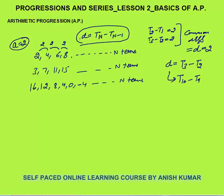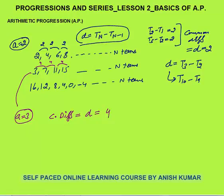The second progression is also an arithmetic progression. Here the first term A is 3. What is the common difference D? You can see that 7 minus 3 is 4, so the difference is 4. 11 minus 7 is again 4. 15 minus 11 is again 4. So this is also an arithmetic progression with a common difference D equal to 4.